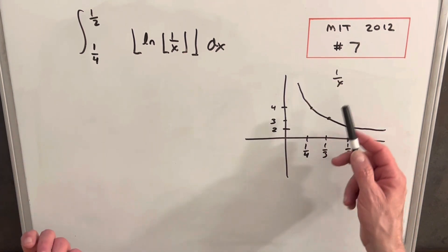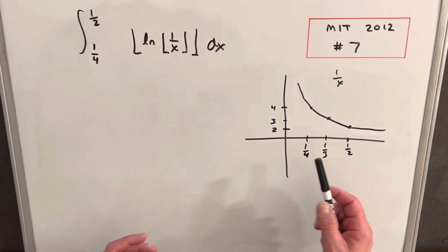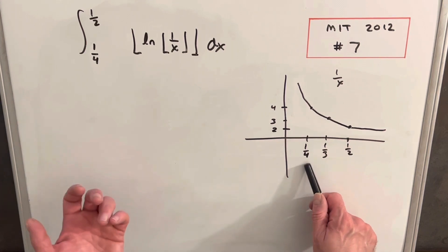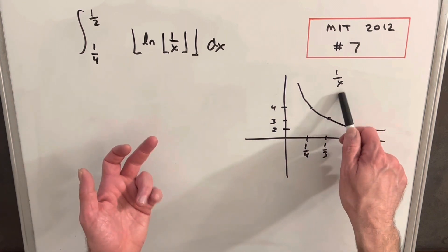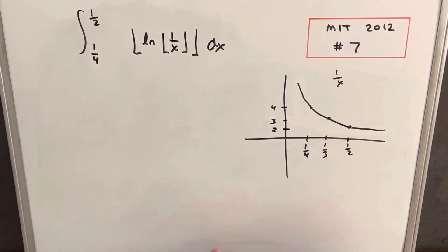Okay, so looking here at a very rough graph of just one over x, we're not worried about the floor yet. We notice that at one-fourth, the start of our bounds, we're at four. Plugging one-third in here, we're going to be at three, and one-half, we're going to be at two. We're only interested in that region because that's the bounds of our integral.